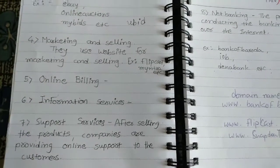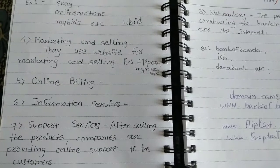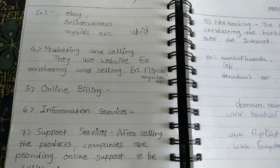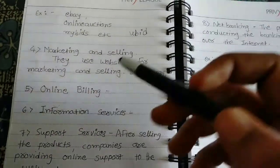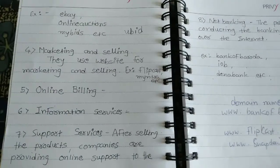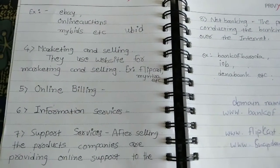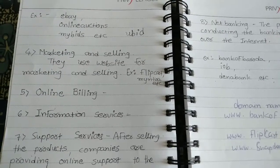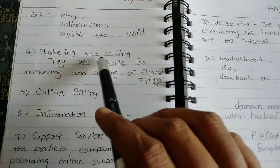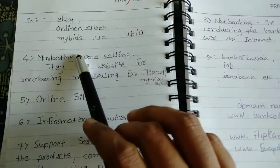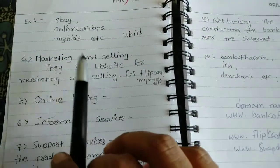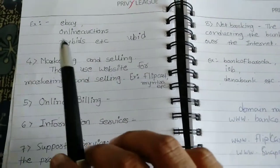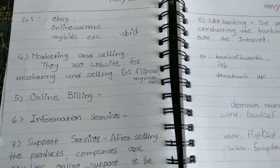The fourth application is marketing and selling. If you want to market or sell your products online, then you can do it by using e-commerce. Business activities include marketing and selling. You can do it by using Flipkart, Myntra, Snapdeal — all these websites are used for marketing and selling products.